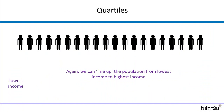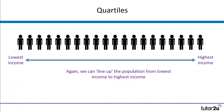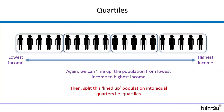No prizes for guessing what a quartile looks like. We've lined our population up again from lowest to highest income, splitting them into four equal groups. These are our quartiles.